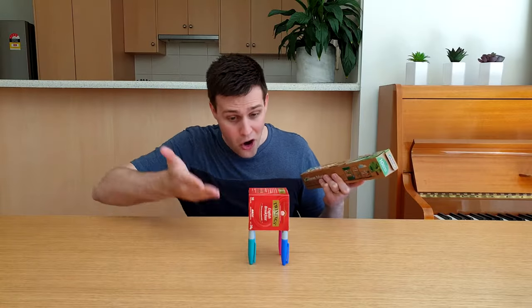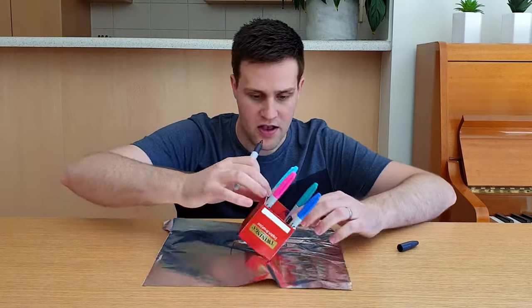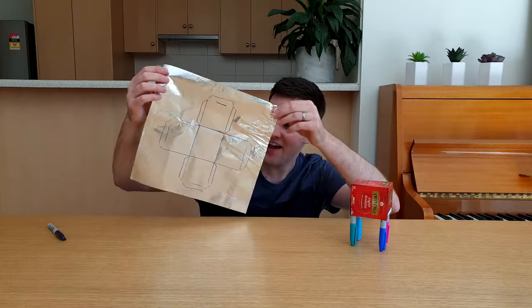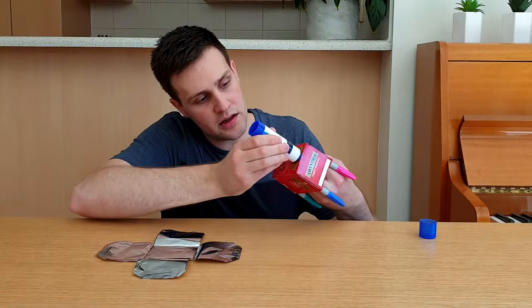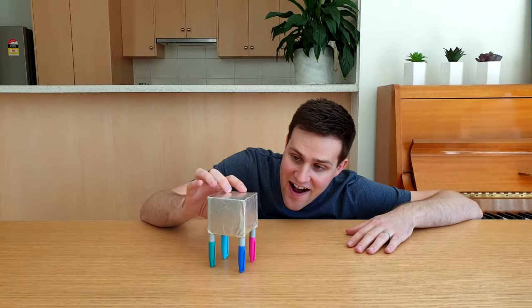The second step is to cover the whole box with aluminum foil. Use some glue to stick it in place. You can skip this step if you want, but it does make Scribbles look nice and shiny.